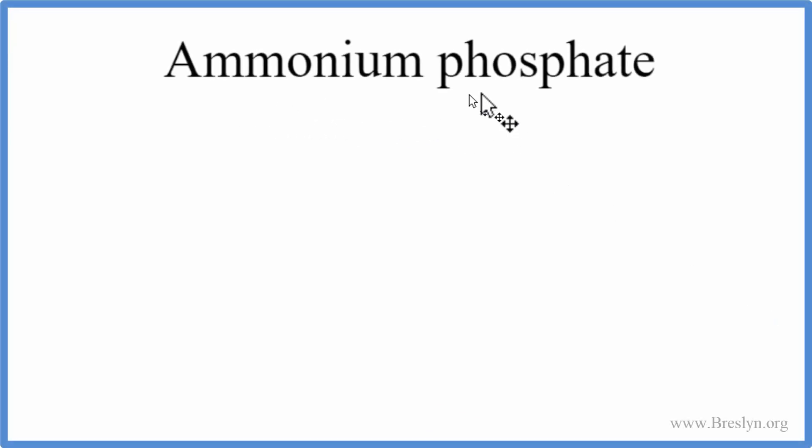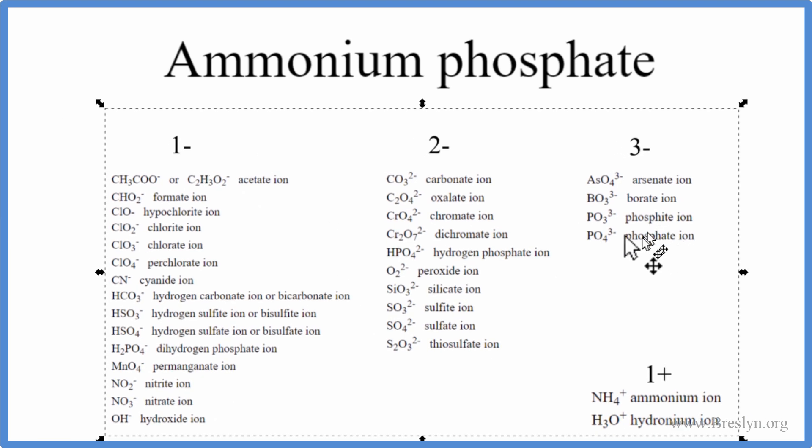To write the formula for ammonium phosphate, the first thing we need to do is figure out the formula for the ammonium ion. You won't find the ammonium ion on the periodic table. It's actually a polyatomic ion, a group of atoms bonded together. So we can look that up on a table of polyatomic ions.